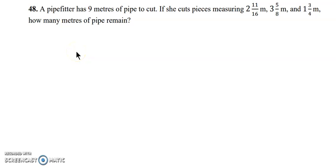Cumulative review 1.1 to 1.11, question 48. A pipe fitter has 9 meters of pipe to cut. If she cuts pieces measuring 2 11/16 of a meter, 3 5/8 of a meter, and 1 3/4 of a meter, how many meters of pipe remain?